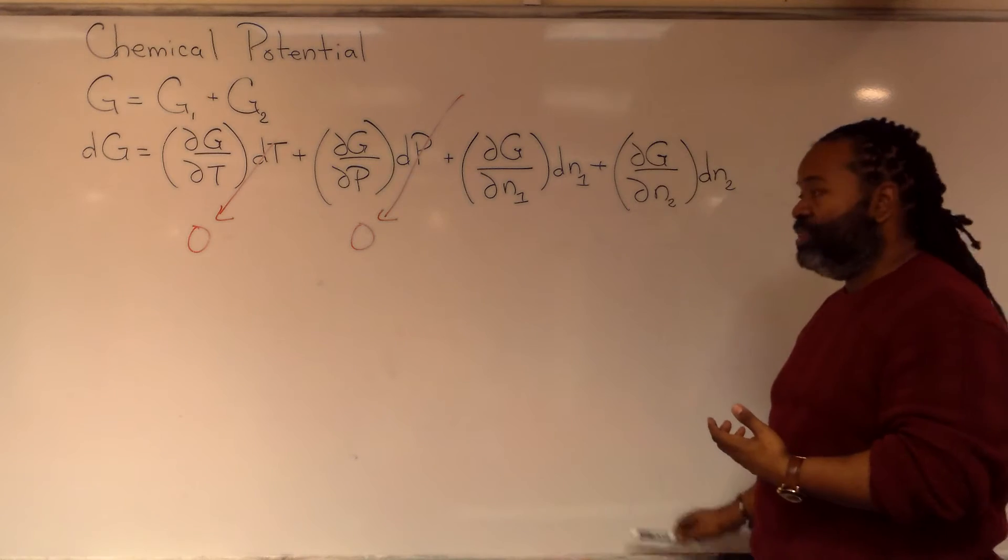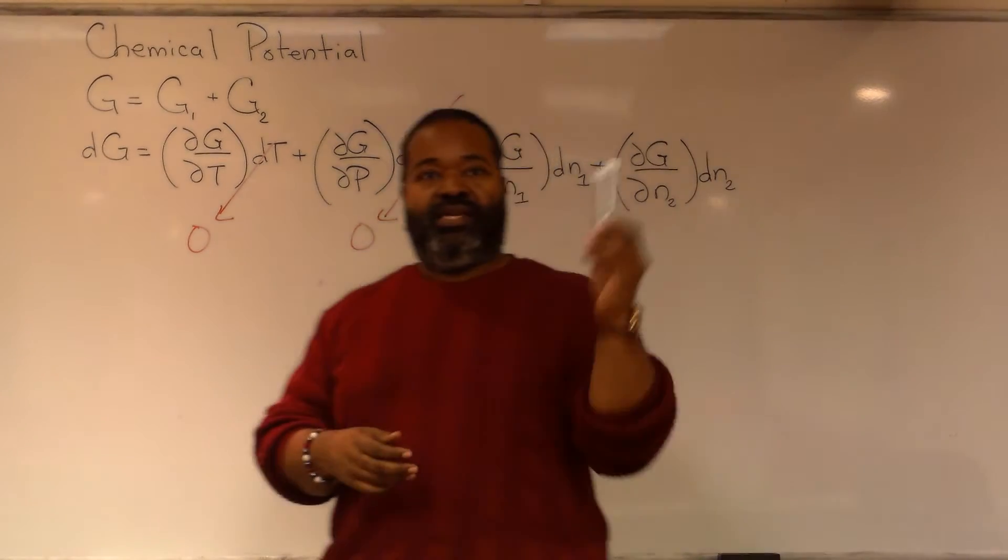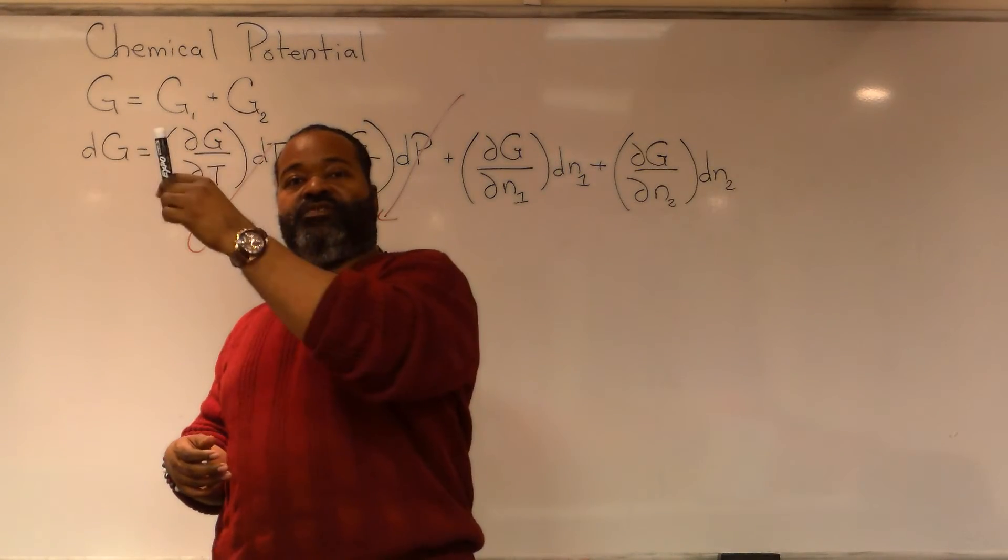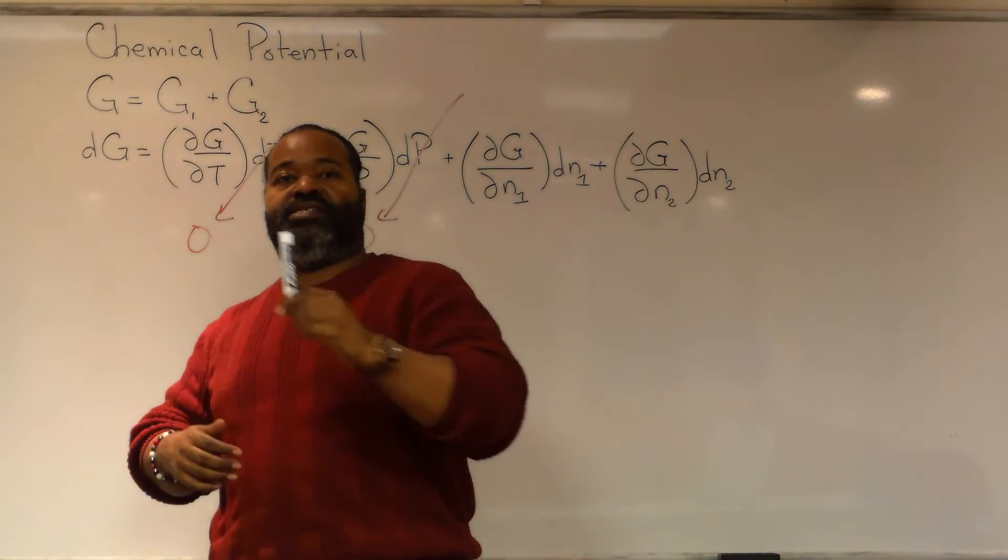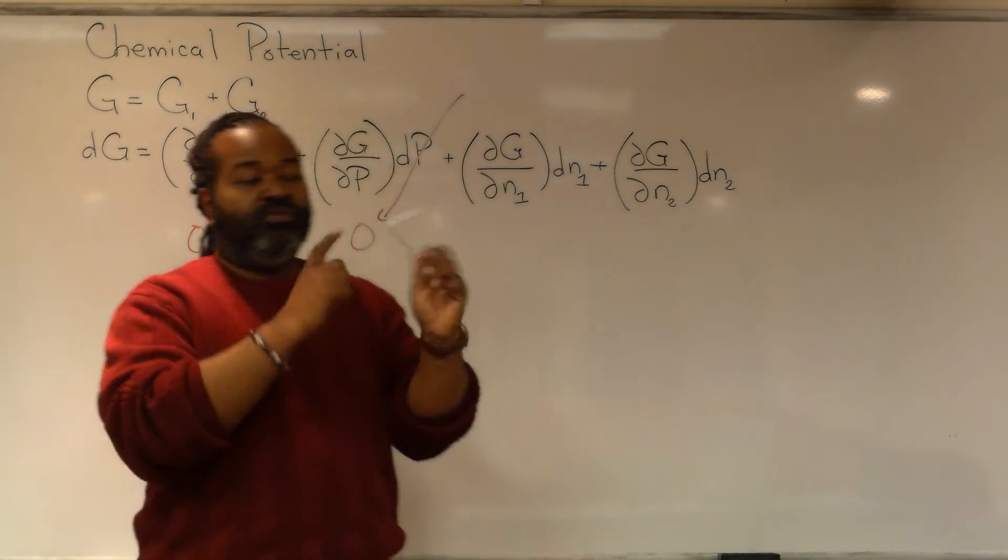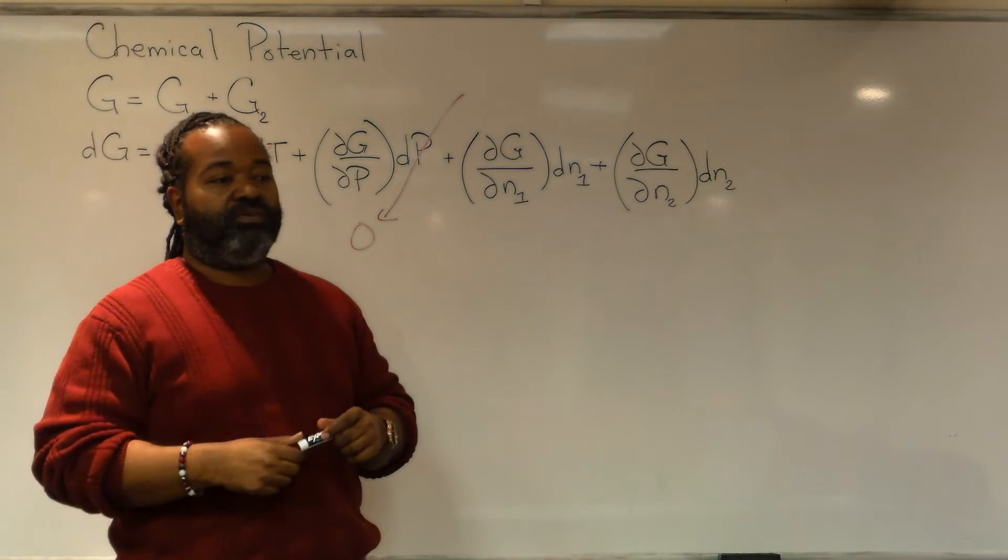the number of things in phase one transition to phase two at the same rate as things transition from phase two to phase one. So with those forward and reverse being in equilibrium,